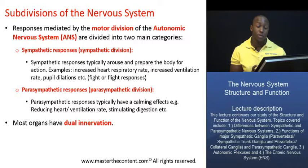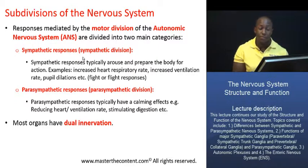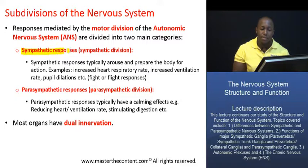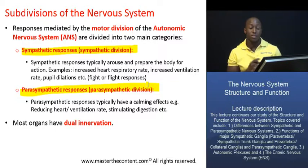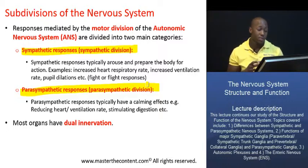On this slide we are going to further divide the ANS, the autonomic nervous system, into two main divisions. We're going to divide it into the sympathetic division, or the division that mediates sympathetic responses, and we are also going to divide it into the parasympathetic division, or the division that mediates parasympathetic responses. These are the two main divisions of the motor division of the ANS.